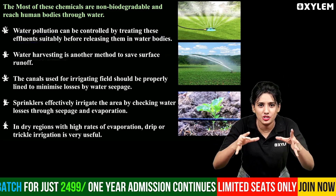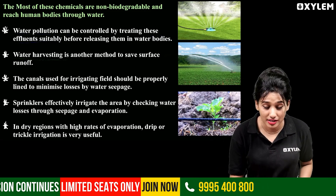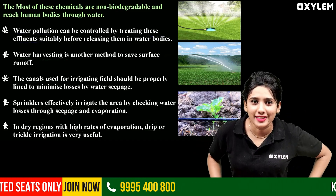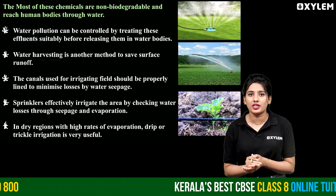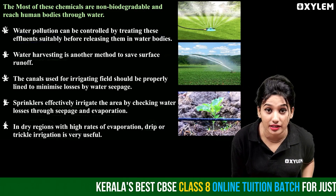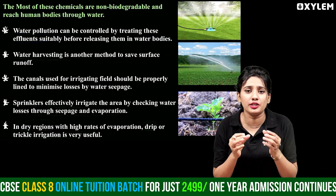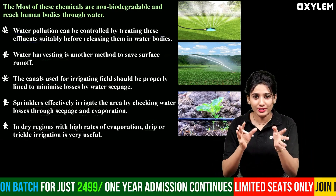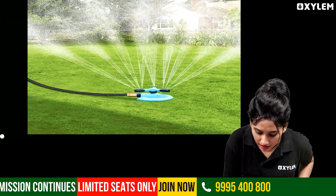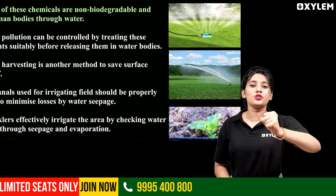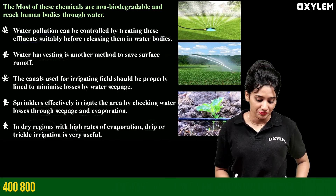Another method is to use sprinklers. Sprinklers effectively irrigate the area by checking water losses through seepage and evaporation. We need to address leakage and evaporation because of water scarcity. As you can see in the picture, this is the sprinkler method.